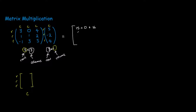For the second row of the solution, you take the second row of the first matrix times the column of the second matrix. So it would be 1 times 5, which is 5, plus 1 times negative 2, which is negative 2, and 2 times 4, which is plus 8.